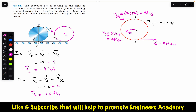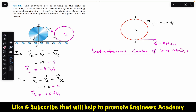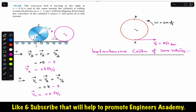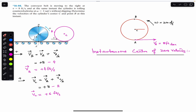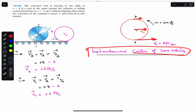Using the instantaneous center of zero velocity method: after some time t, point B will have a new position. Point A moves to the right at 8 feet per second, VC is towards the right, and VB is towards the right as well. Since the velocities of A, C, and B are all parallel to each other, we need to use the method for finding the instantaneous center when velocities are parallel.